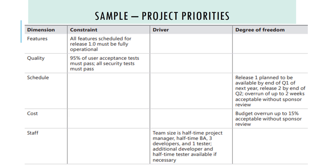For schedule, Release 1 is planned to be available by the end of the first quarter of next year, and Release 2 by the end of the second quarter. An overrun of up to 2 weeks is acceptable without sponsor review, so we have a 2-week margin for schedule.